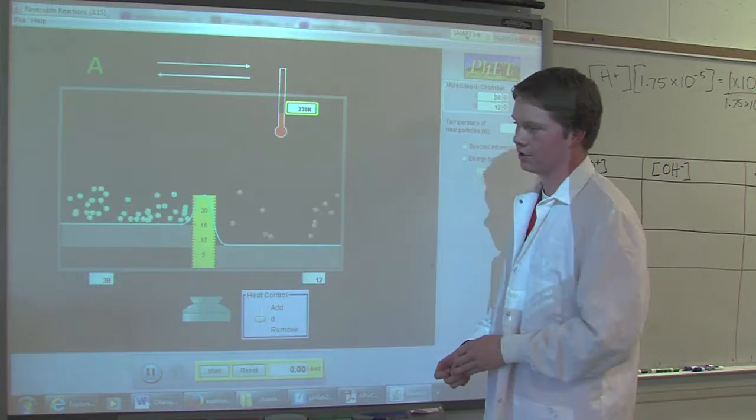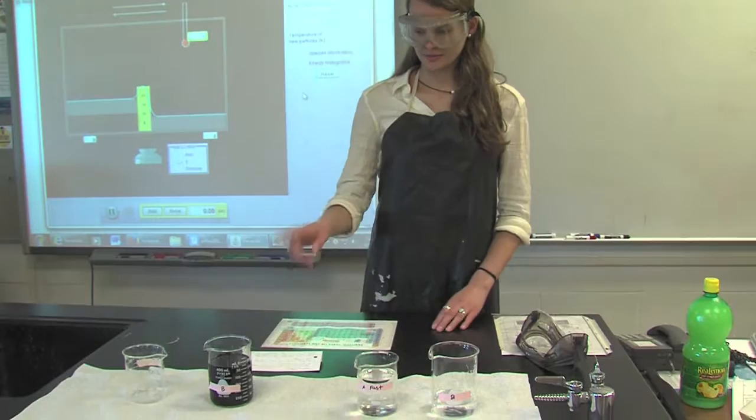Here in beaker A we have four times as much potassium iodate as we had in the original reaction, which should speed up the reaction.